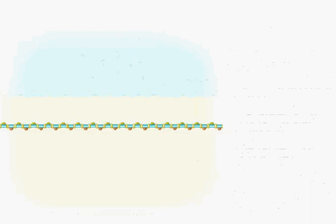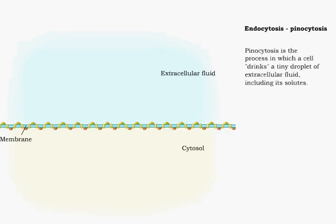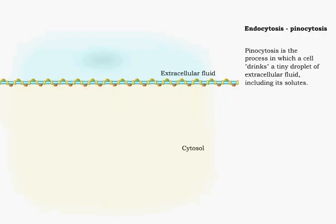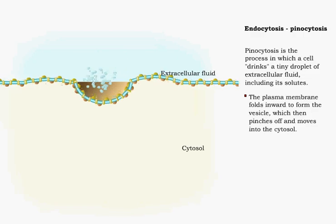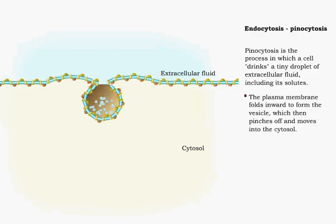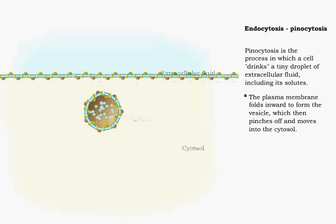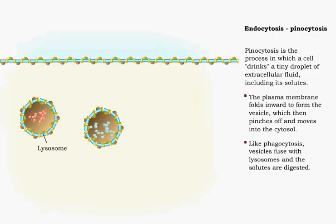Pinocytosis is the process in which a cell drinks a tiny droplet of extracellular fluid, including solutes. The plasma membrane folds inward to form the vesicle, which then pinches off and moves into the cytosol. Like phagocytosis, vesicles fuse with lysosomes, and the solutes are digested.